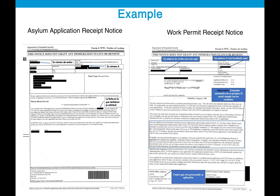Here are example images of documents that will have your information on them. On the left is an example of an asylum application receipt notice — you can pause the video to review where your receipt number, A number, and date of receipt would appear. On the right is a work permit receipt notice, which also contains similar information including your receipt number, A number, and date of receipt.